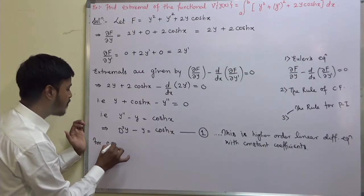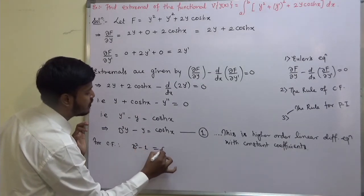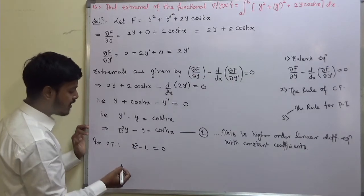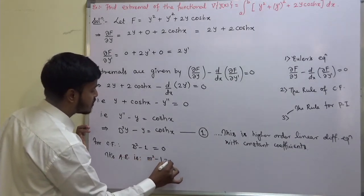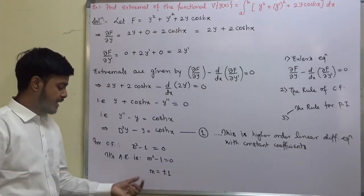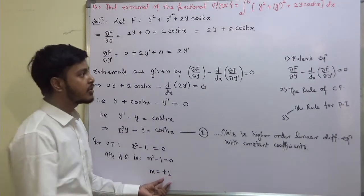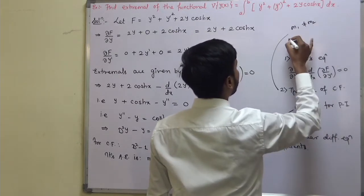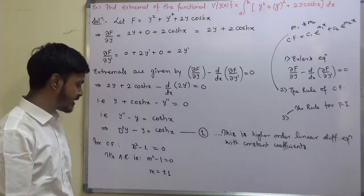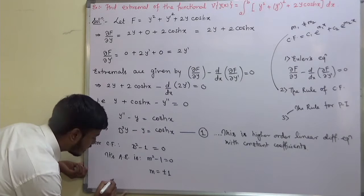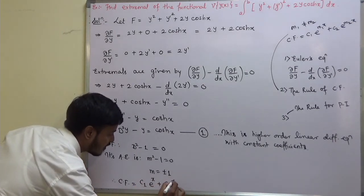For the complementary function, we write the auxiliary equation by putting D in place of d/dx: m-squared minus 1 equals 0, giving m equals plus or minus 1. Since the roots are real and unequal, the complementary function is CF equals c1 e to the power x plus c2 e to the power minus x.